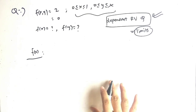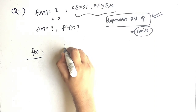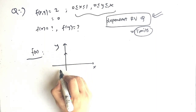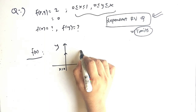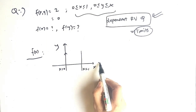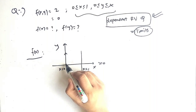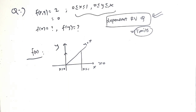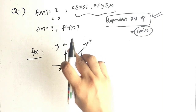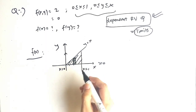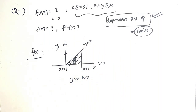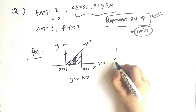Our first step is to find the graph. This is the x-axis and this is the y-axis. The limit for x is 0 to 1, so x equals 0 is this axis and x equals 1 is this line. For y, y equals 0 is this line and y equals x is this diagonal line. This is our area. Since we have to eliminate y, we select the vertical strip, giving y range from 0 to x.